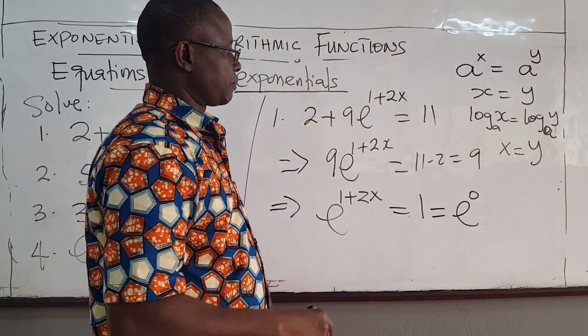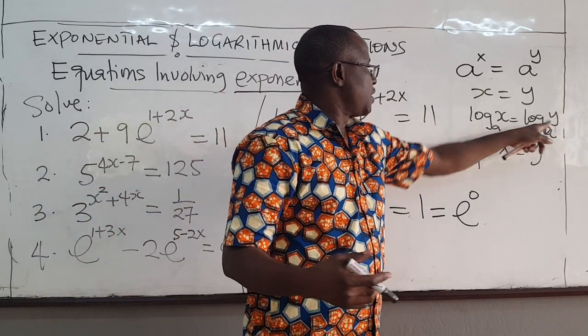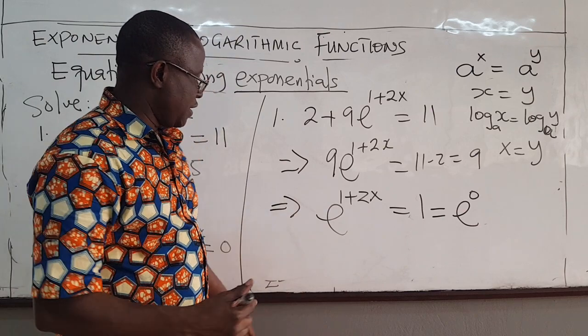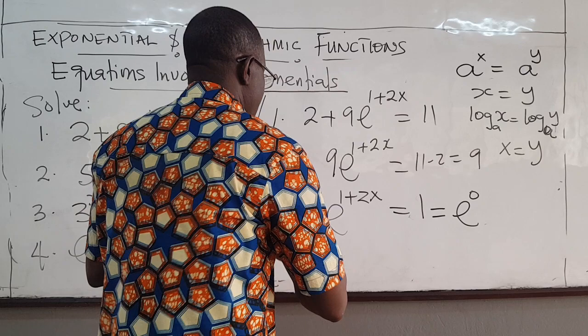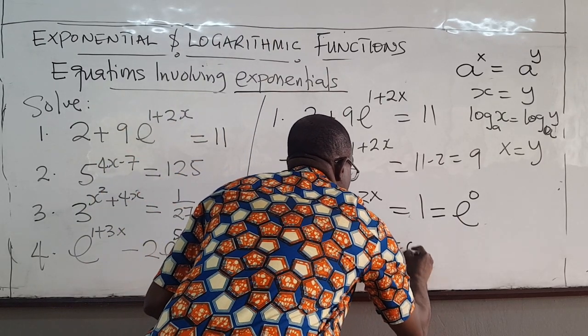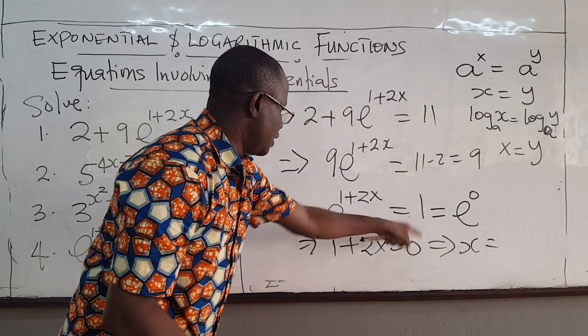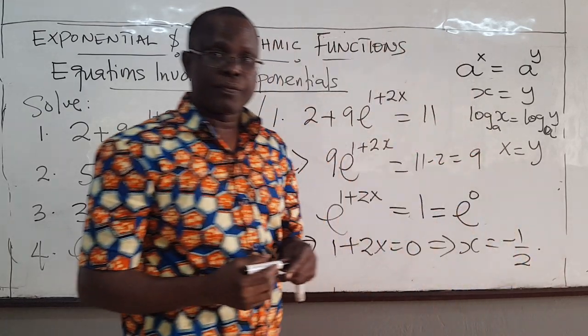Since log is continuous, it's one to one. If this equals that, then the argument must be the same. So that's what we're going to use here. This means that 1 + 2x must equal 0. So 1 + 2x = 0, this is easy to solve. It means x equals negative 1 over 2.